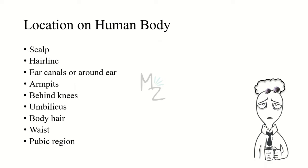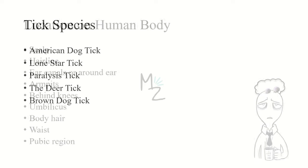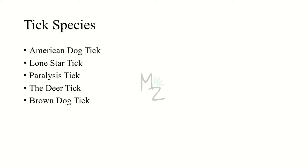The locations on the human body where ticks commonly attach include the scalp, hairline, ear canals, armpits, behind the knees, the umbilicus (belly button), body hair, waist, and the pubic region.